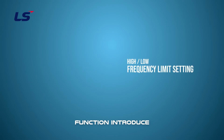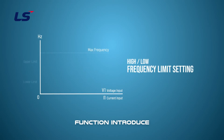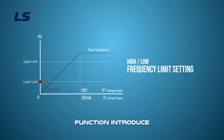Second, setting upper and lower frequency limits. The minimum frequency for the upper limit is the lower limit, and the maximum frequency for the lower limit is the upper limit. When setting the target frequency with the keypad, it can be set between the upper limit and lower limit.